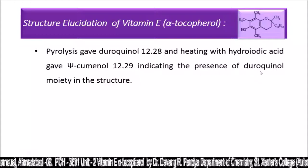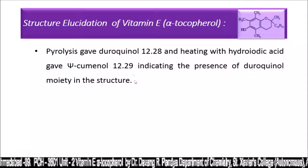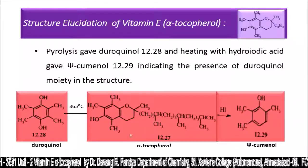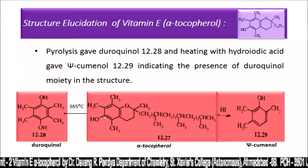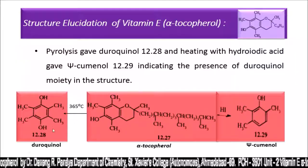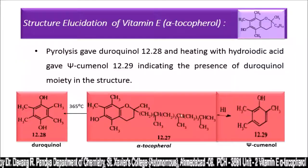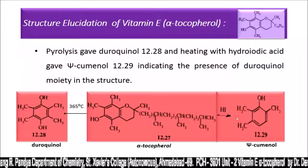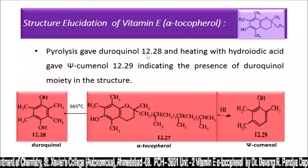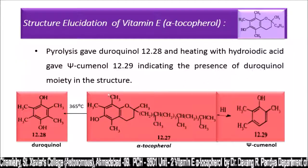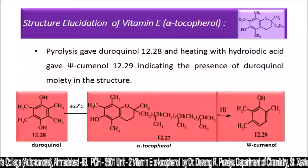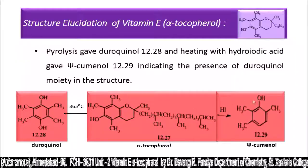Pyrolysis gave duroquinol (structure 12.28), and heating with hydroiodic acid gave cycuminol (12.29), indicating the presence of a duroquinol moiety in the structure. On heating at 365°C, alpha tocopherol yields duroquinol, and on treating with hydroiodic acid it gives cycuminol. These two reactions confirm the duroquinol moiety present in the compound.